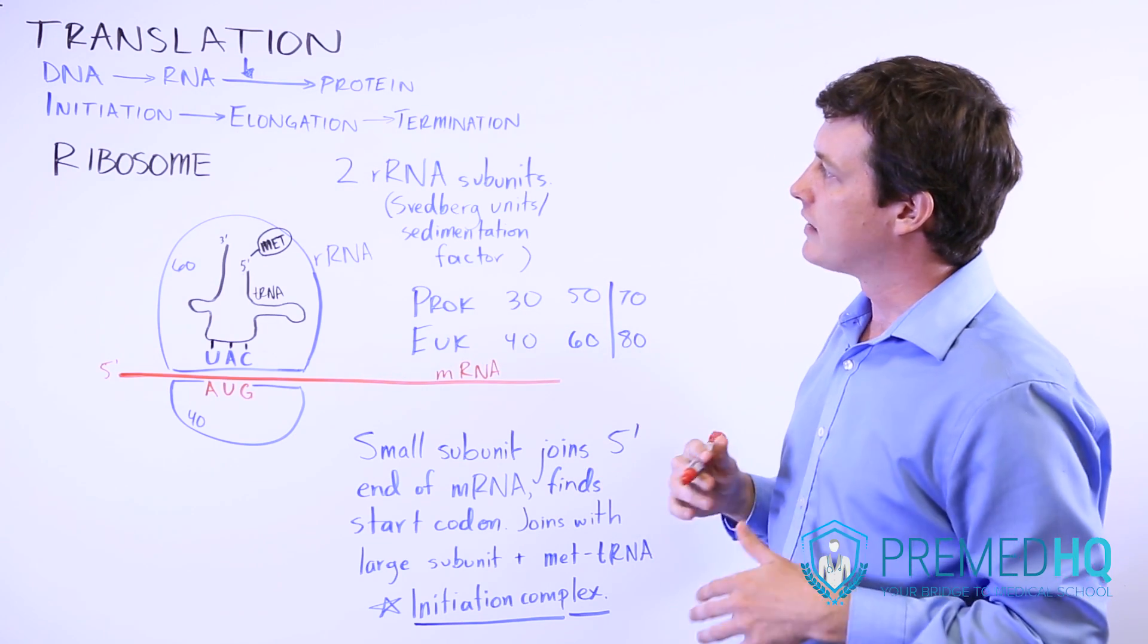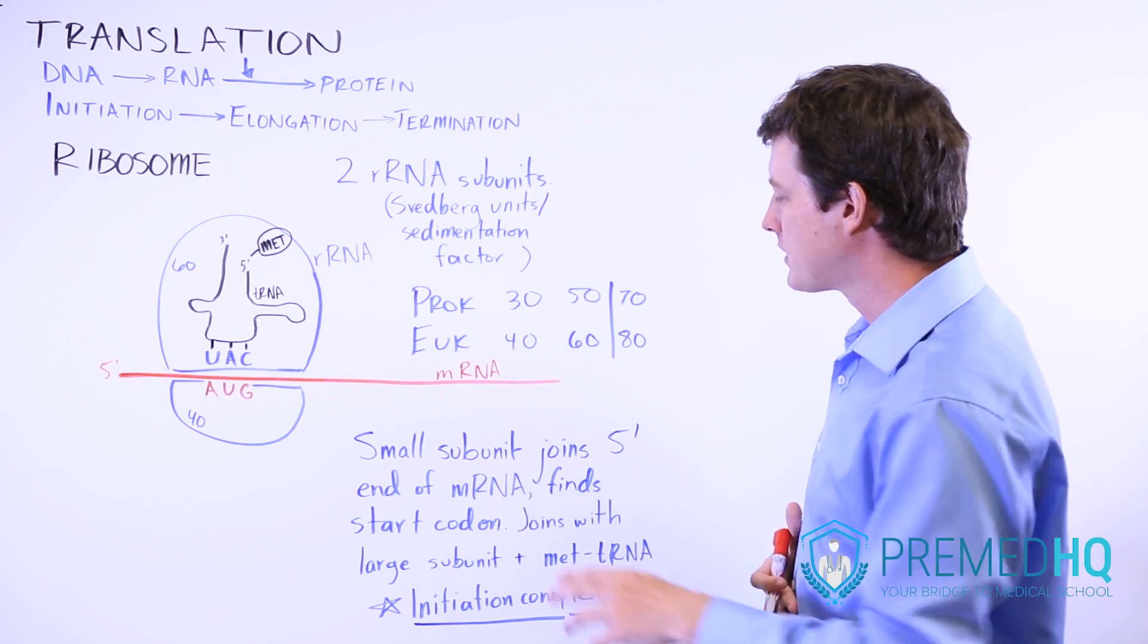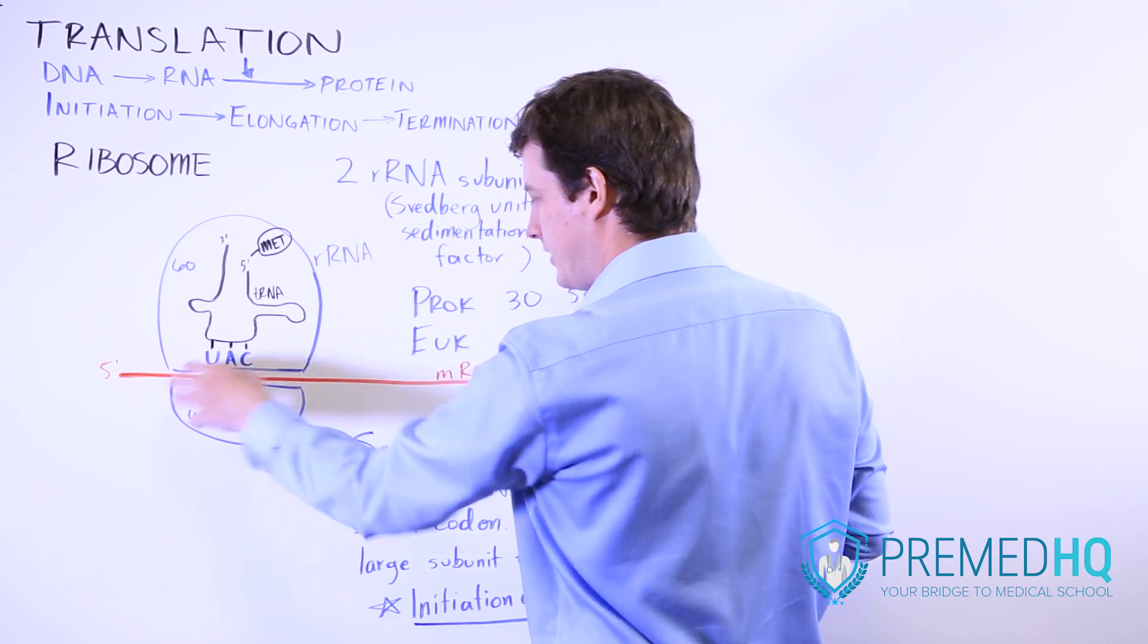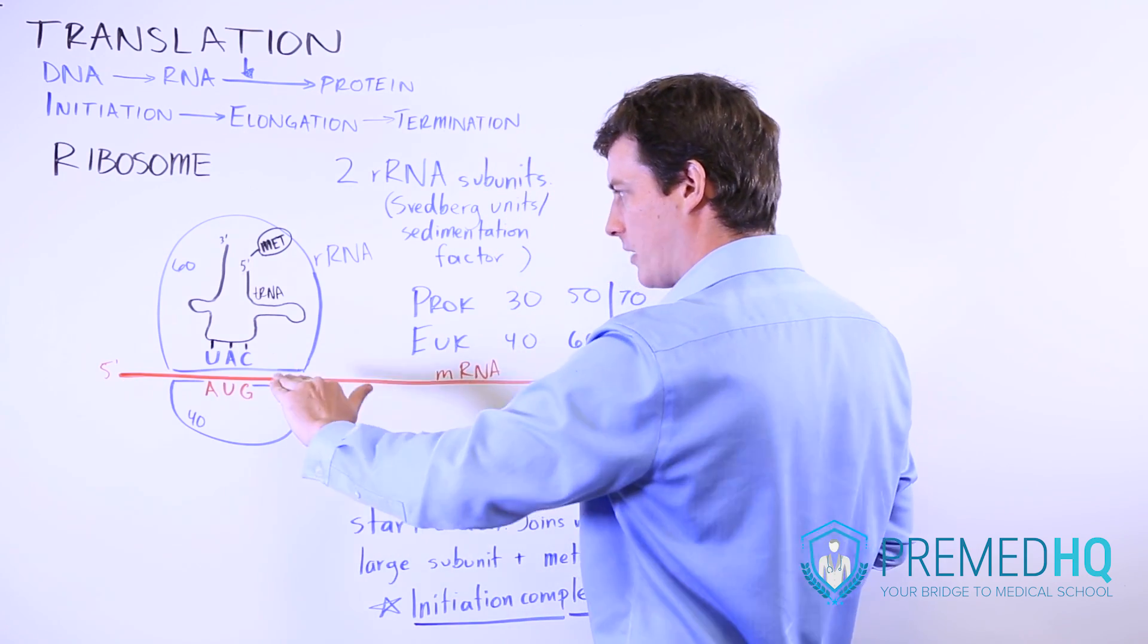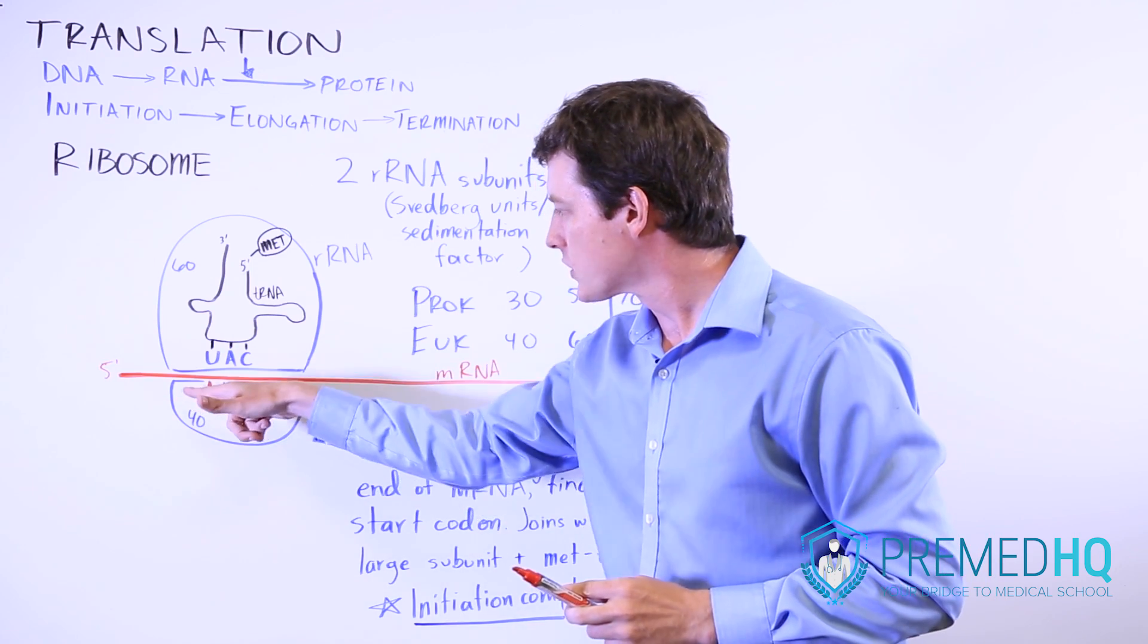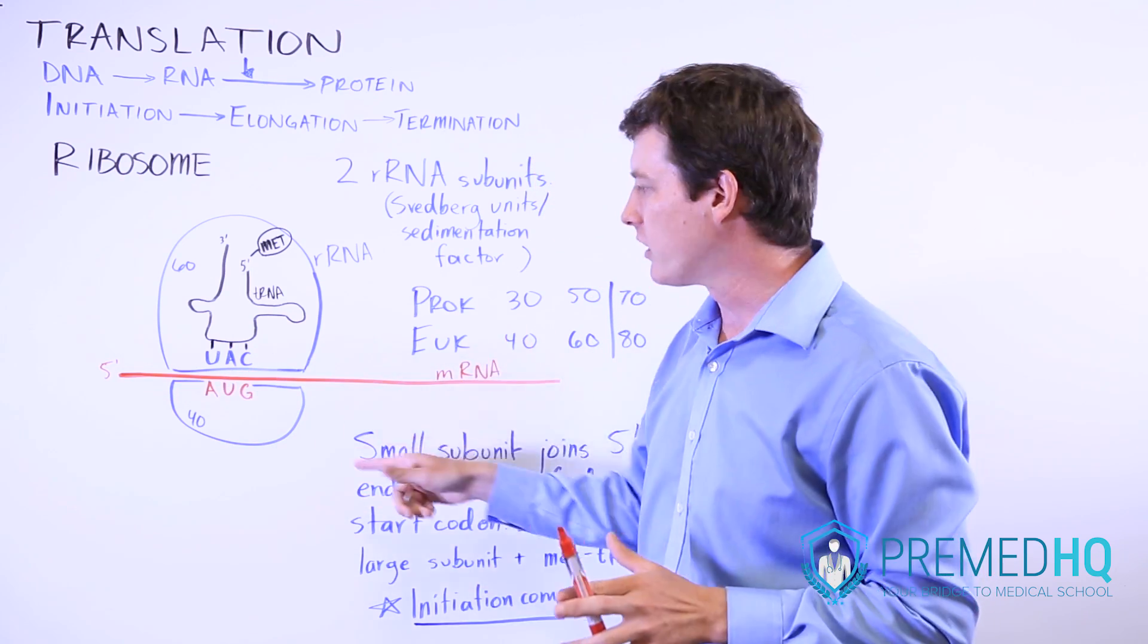The initiation process is how the ribosome is formed. What happens first is that the small subunit will join the five prime end of this mRNA transcript. When it does that, it scans around and looks for the start codon. Remember that that is AUG, and that's a universal start codon.